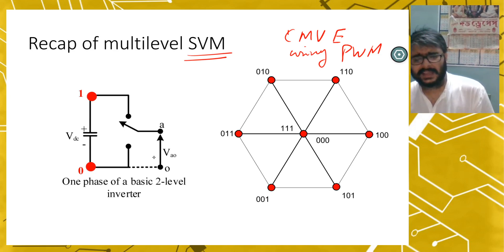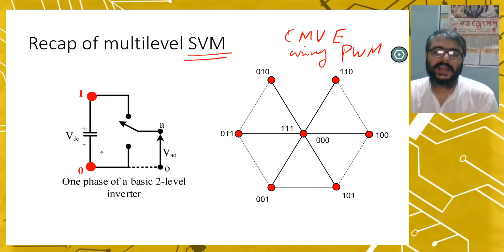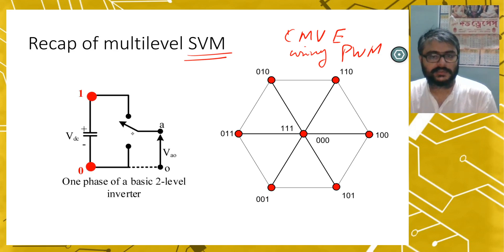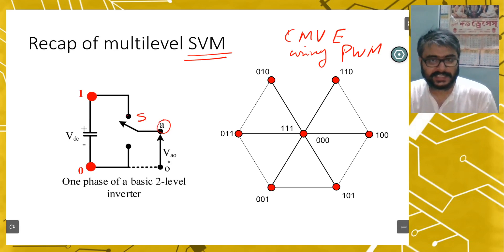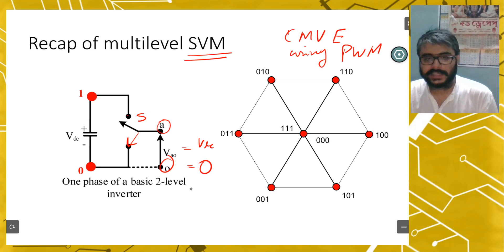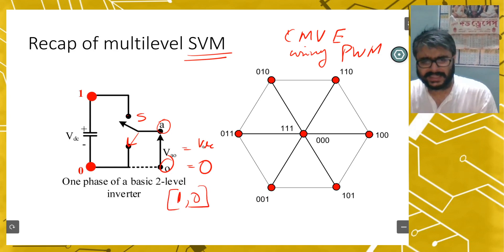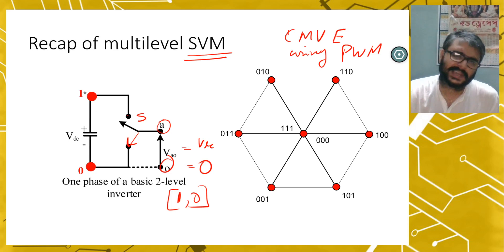Let's look at a basic half-bridge structure, which is just one phase of a basic two-level inverter. This is a voltage source or capacitor charging to VDC voltage. We denote this terminal as 1 and this terminal as 0. If the switch S is connected to terminal 1, then Va0 equals VDC. If the switch is connected to terminal 0, then Va0 equals 0. So it has two levels: 1 and 0.